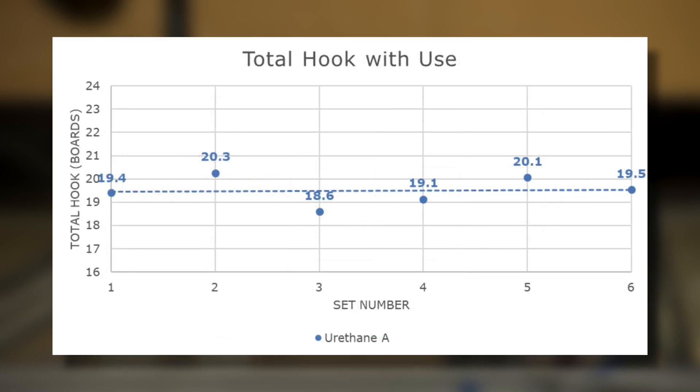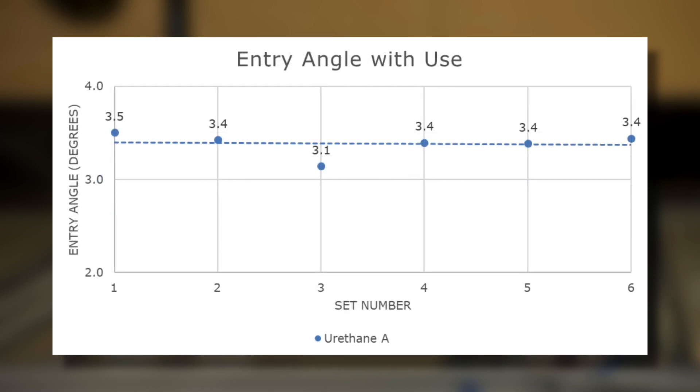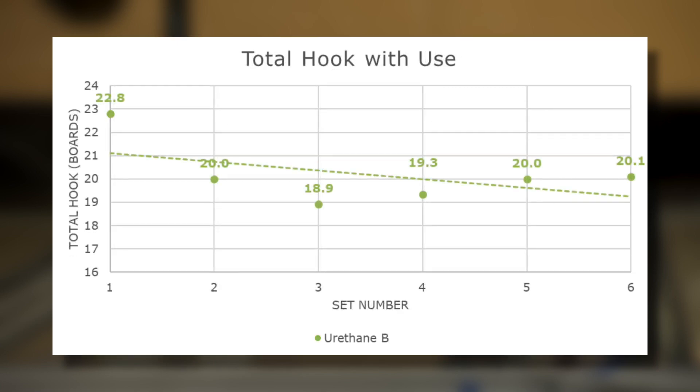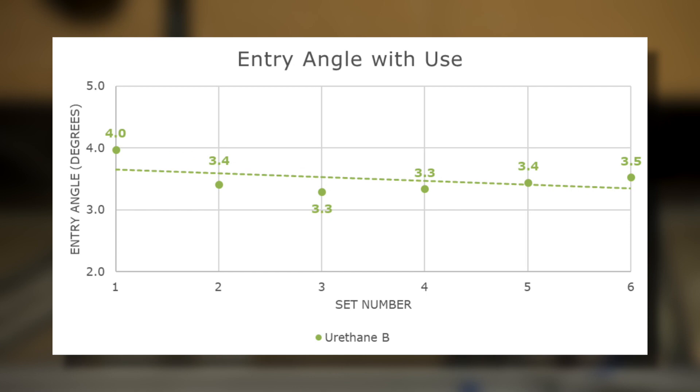In terms of total hook and entry angle, there were also minimal differences relating to the reduction in hardness over time. Both measurements remain similar throughout the testing, and the slight variations relate more closely to the angle of attack on the pattern rather than the observed loss in hardness. Just like the testing showed with urethane ball A, the difference in hardness measurements for urethane ball B did not correlate to differences in total hook or entry angle.